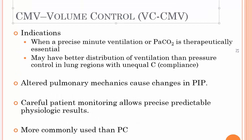The indication for volume control CMV is when precise minute ventilation or CO2 control is therapeutically essential. It may have better distribution of ventilation than pressure control in lung regions with unequal compliance. When you have a patient on pressure control with difficulty controlling CO2, you switch to volume control for better CO2 management. Altered pulmonary mechanics cause changes in peak inspiratory pressure without changing volume or flow. Careful patient monitoring allows precise, predictable physiologic results, and it is probably the most commonly used mode today.